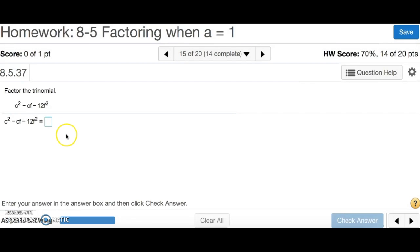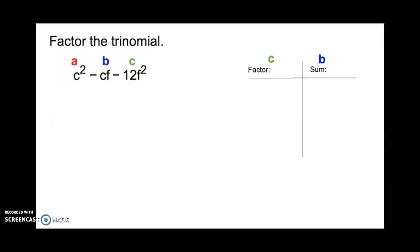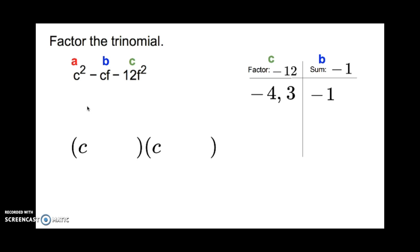Number 15 says to factor the trinomial. We have an s squared at the end, so we treat it the same as the previous problem. Write a, b, and c, and our factor table. c is negative 12 and b is negative 1 — there's no written coefficient so it's understood to be 1. Two numbers that multiply to negative 12 but add up to negative 1 are negative 4 and 3. The answer is c minus 4f times c plus 4f — putting the f's on the second terms because they multiply to give f squared.